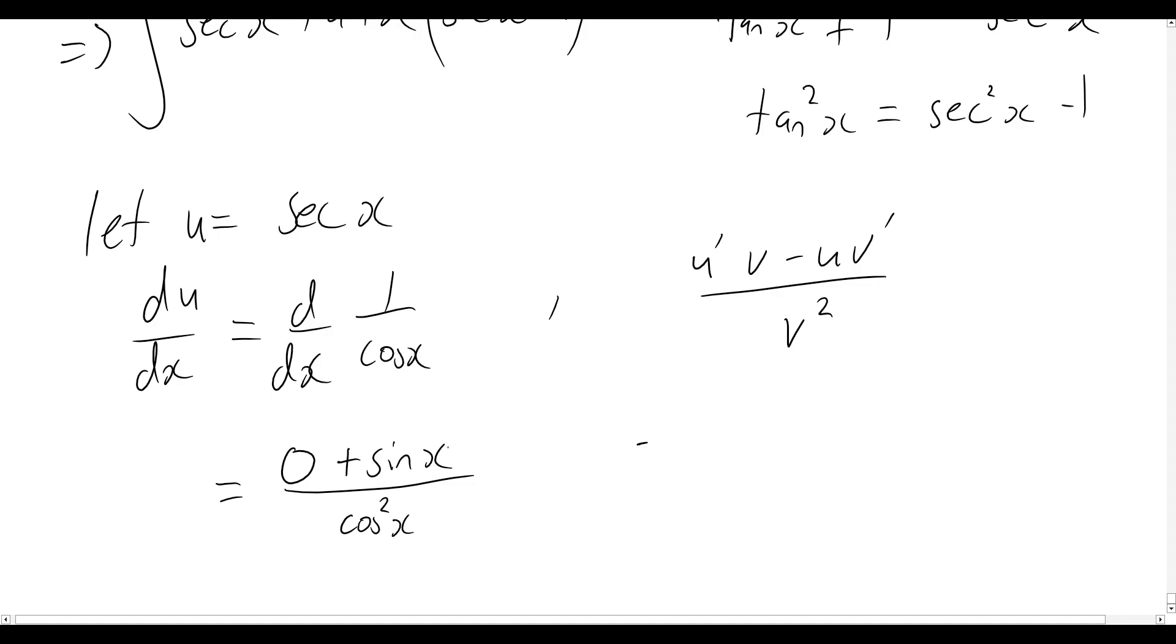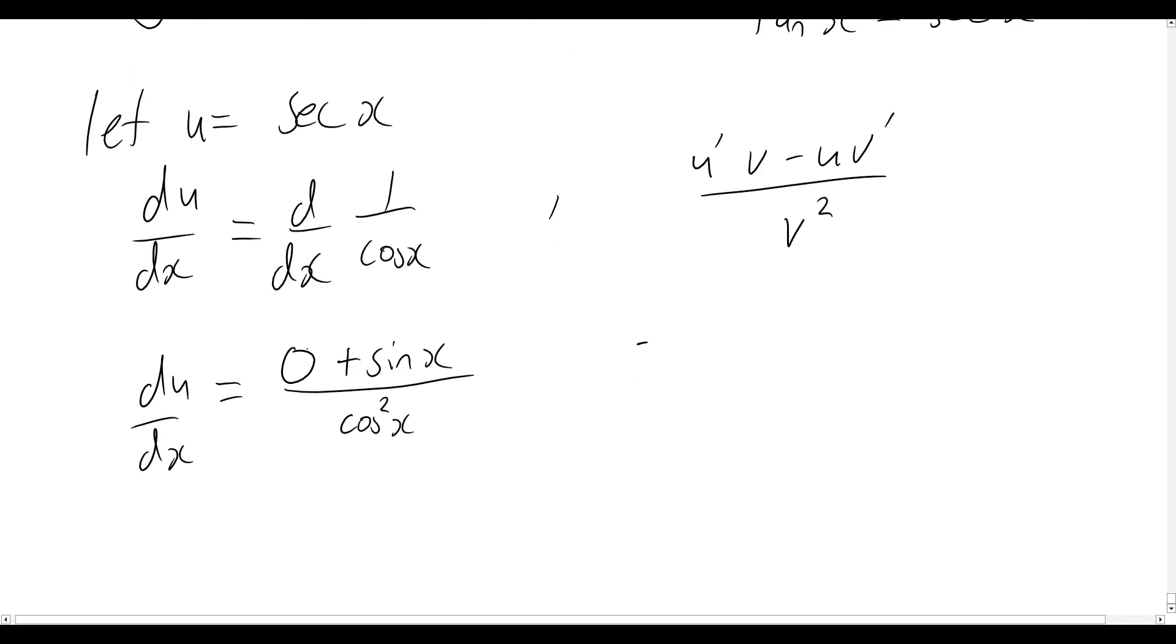Now, this doesn't look like it's going to be very useful for us, but let's quickly rewrite this all out as du dx equal to 0 plus sine x over cos squared x. So, I'll get rid of that 0. Now, sine x over cos x, we know that's equal to tan x, and then we'd be left with a cos x in the denominator. So we can rewrite this as simply tan x sec x.